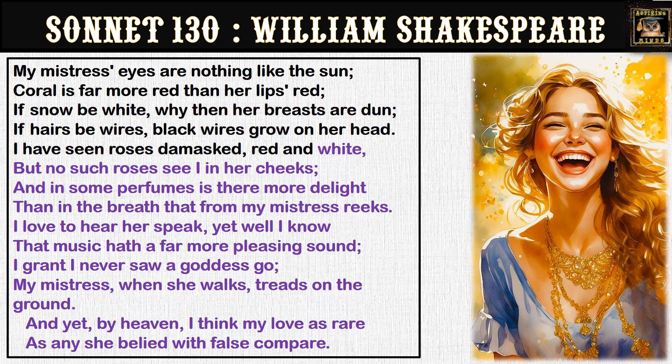Sonnet 130 talks about rejecting the conventional or traditional way of defining beauty and expressing true love by accepting the person as they are. Shakespeare's speaker emphasizes that his mistress is not beautiful in the sense of how people traditionally think a woman should be beautiful, yet he loves her sincerely for who she is. This sonnet challenges the artificial and exaggerated descriptions often found in love poetry, instead presenting the beauty of the lady as it is.